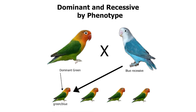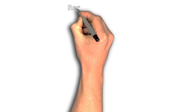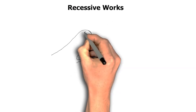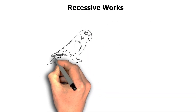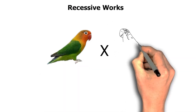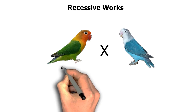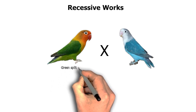bird — like blue Fisher, blue Splatino, or any other — you will get blue birds also. Now we are pairing green split blue with a blue bird. In the offspring you will get green split blue and blue birds as well.